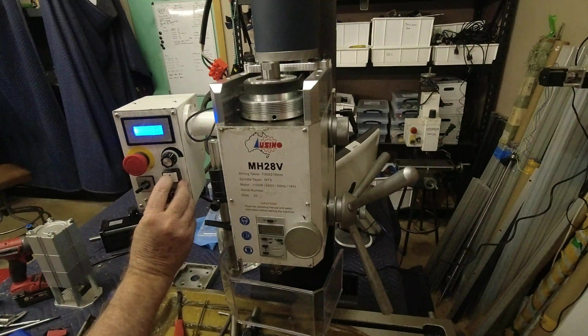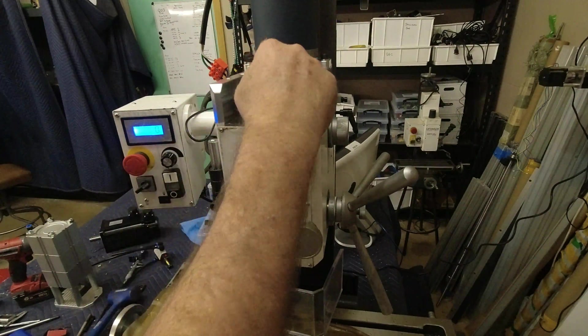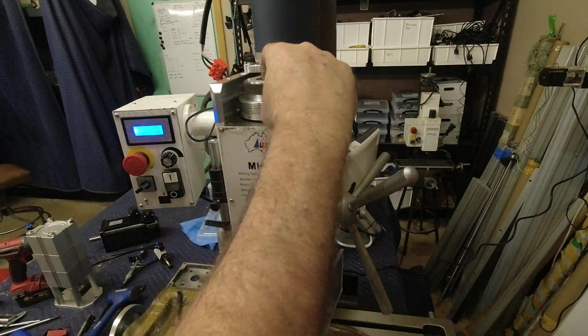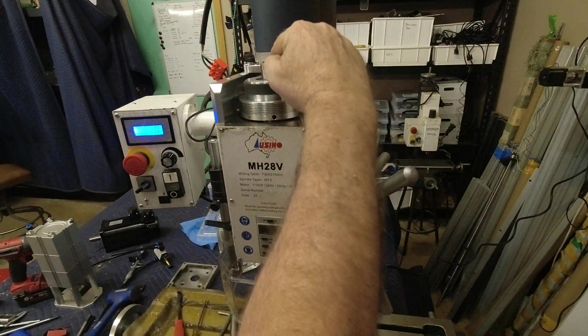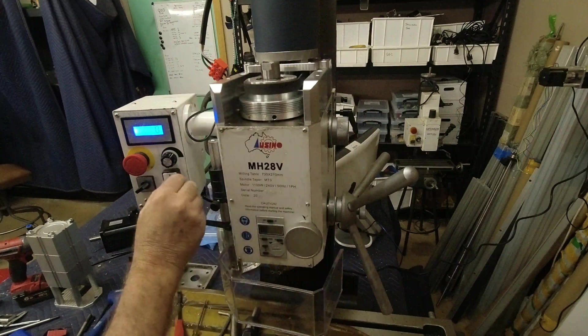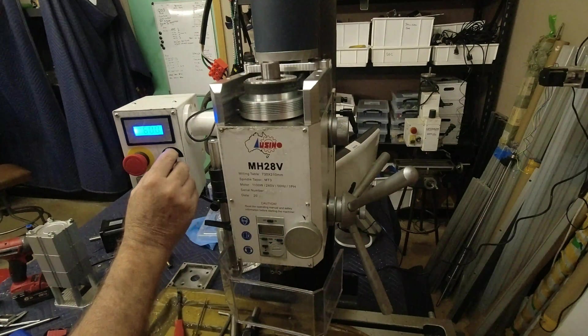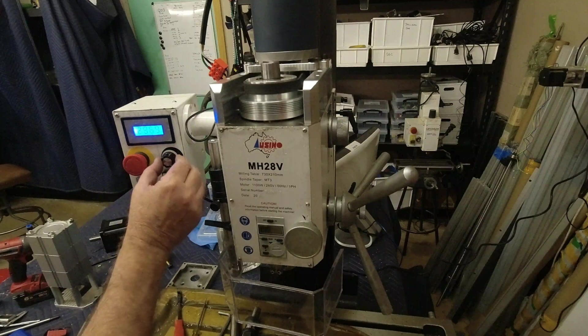And now the belt's all fitted up, we've got to make sure that this is pressed down hard against the stop before we do up these grub screws, otherwise the pulley alignment will be out slightly. And there we have it, belt drive operating all ready to go.